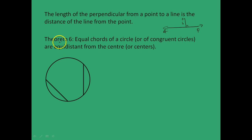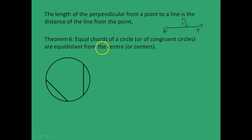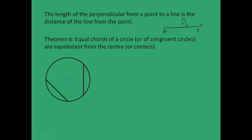From there, we get to Theorem 6, which states: equal chords of a circle, or of congruent circles, are equidistant from the center or centers. Let us see what we mean.